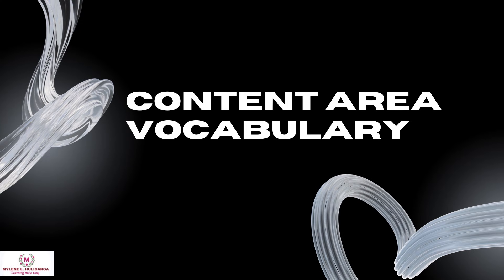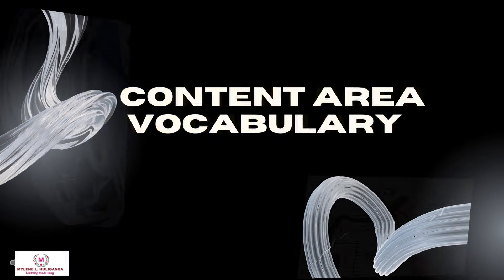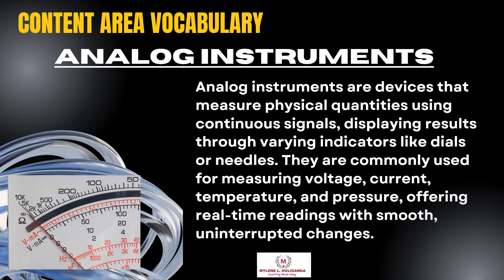The following are the content area vocabulary. Analog instruments are devices that measure physical quantities using continuous signals, displaying results through varying indicators like dials or needles. They are commonly used for measuring voltage, current, temperature, and pressure, offering real-time readings with smooth, uninterrupted changes.